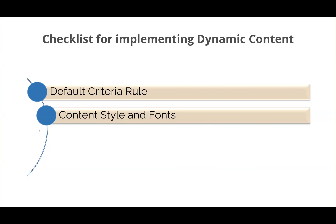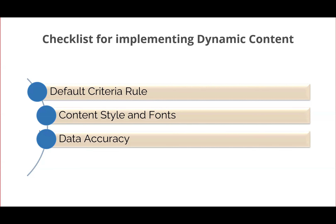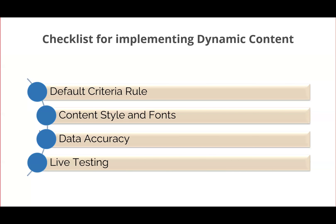Second is content style and fonts. If there is any difference in the content style and font of the dynamic content that doesn't resonate well with the email, it may end up with rendering issues. Third is data accuracy — whenever you're creating dynamic content, make sure you're keeping it updated and relevant as per customer needs. The last point is live testing, which always helps you mitigate any corrections required in dynamic content before it goes live, and ensures all the criteria you've created are working.